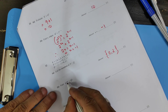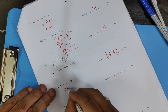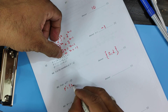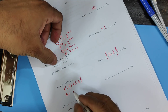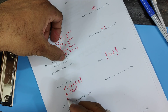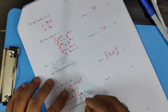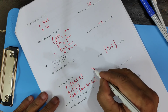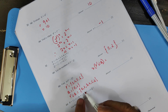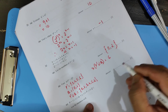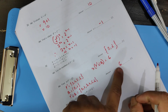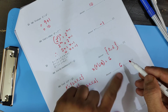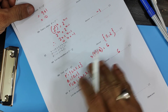Now find the number of elements in P prime union Q. P prime: P has 0, 1, 2, so from the universal set the remaining elements are 3, 4, 5, 6. Q is {0, 2}. P prime union Q is therefore {0, 2, 3, 4, 5, 6}. Counting the elements: 1, 2, 3, 4, 5, 6 — there are 6 of them. Don't put braces around the answer 6; braces would mean it's a set with one element.